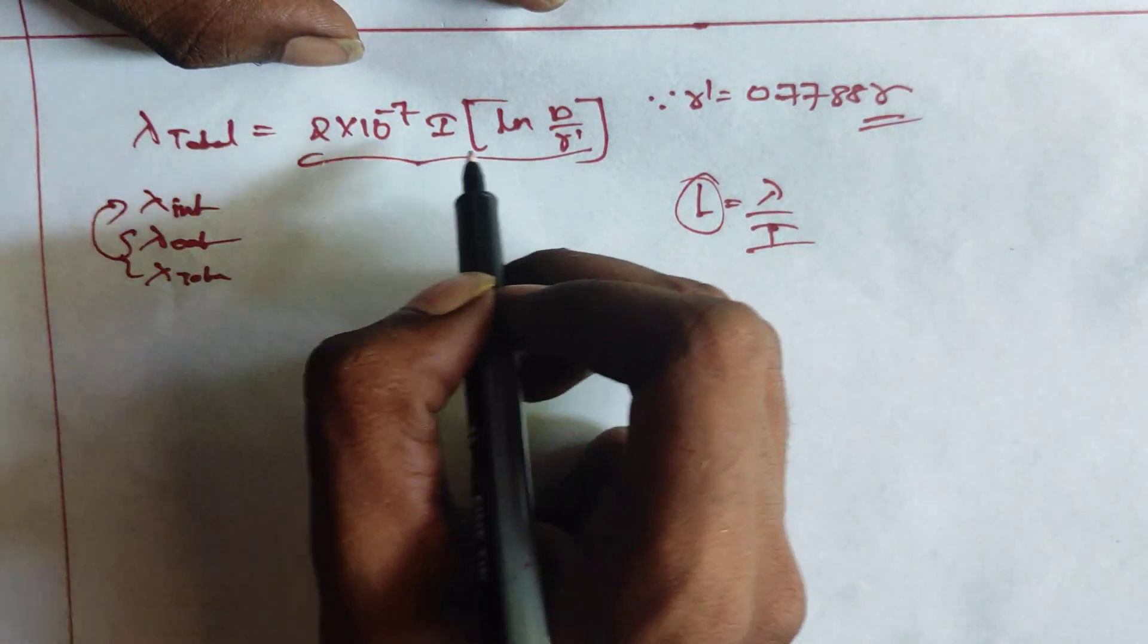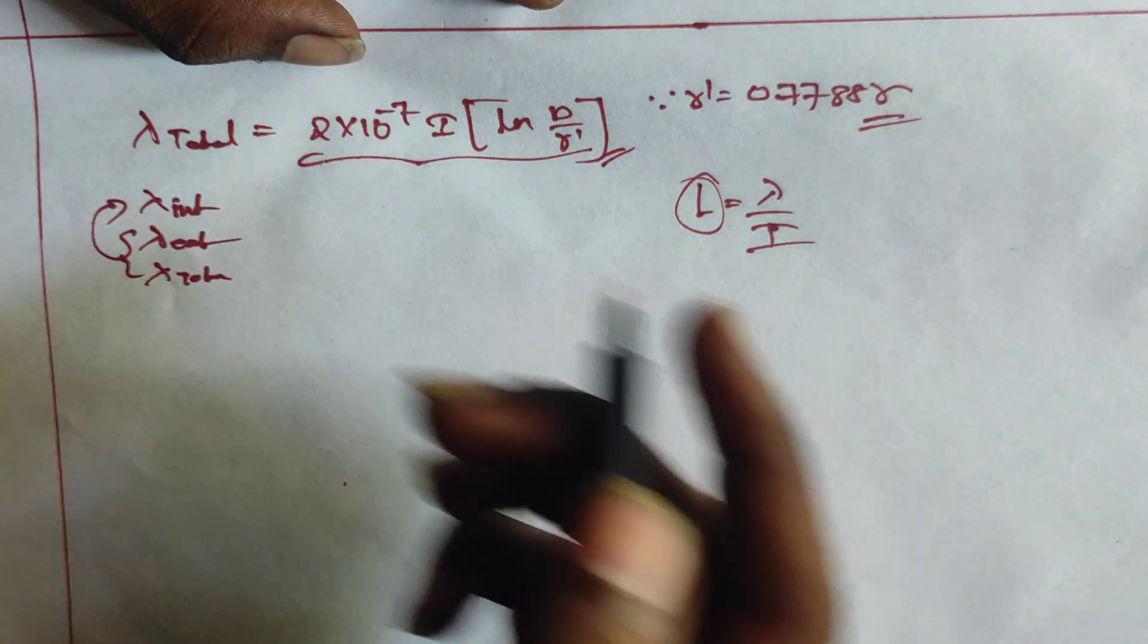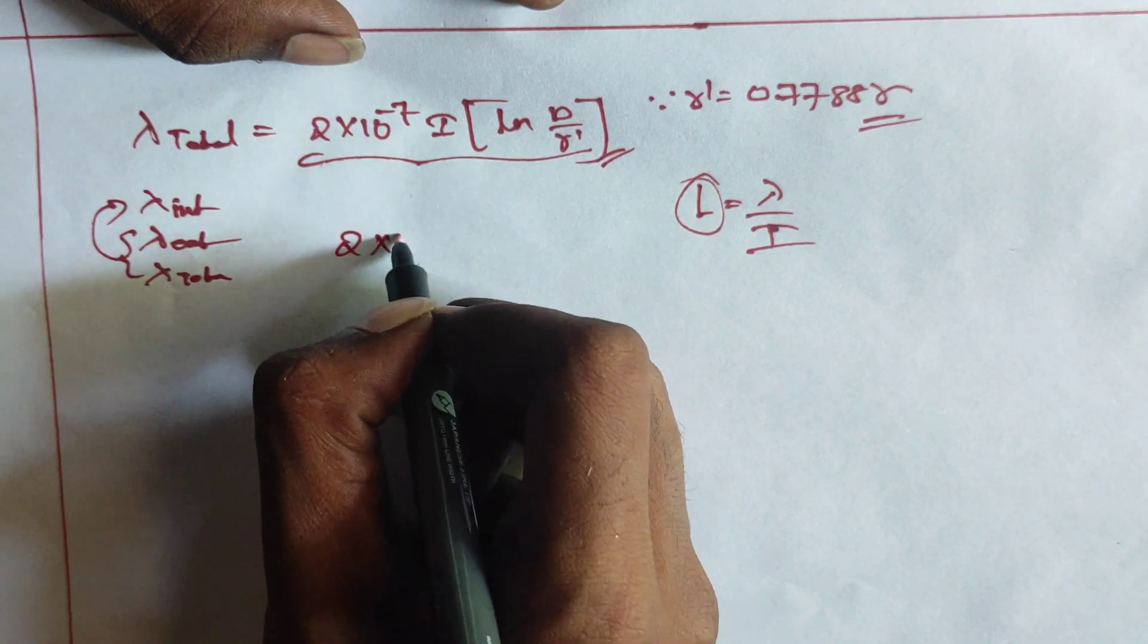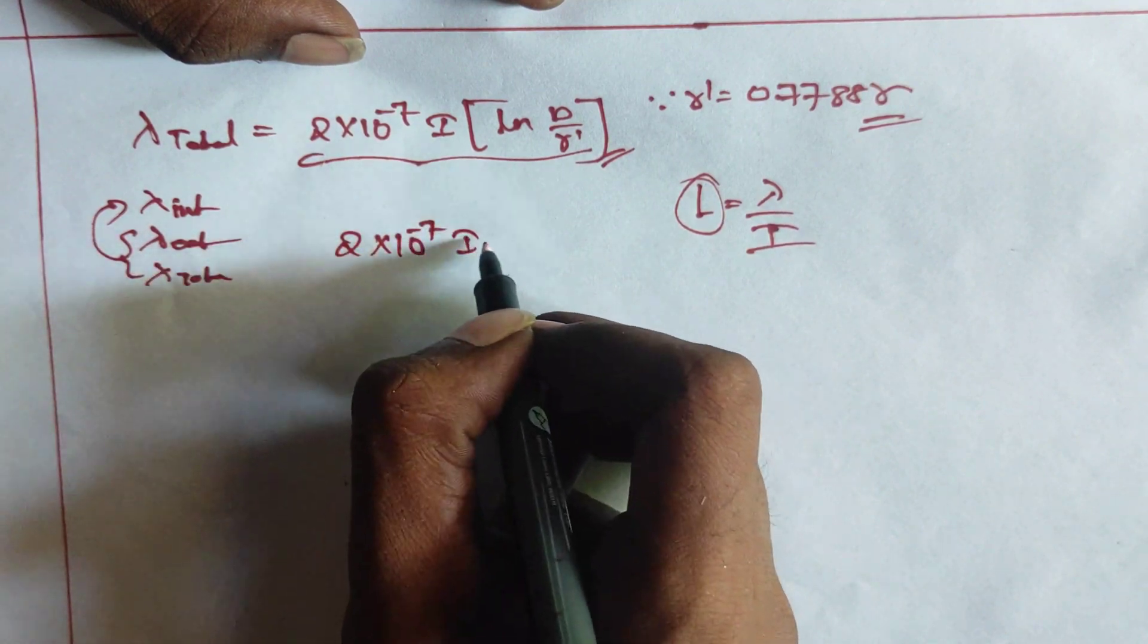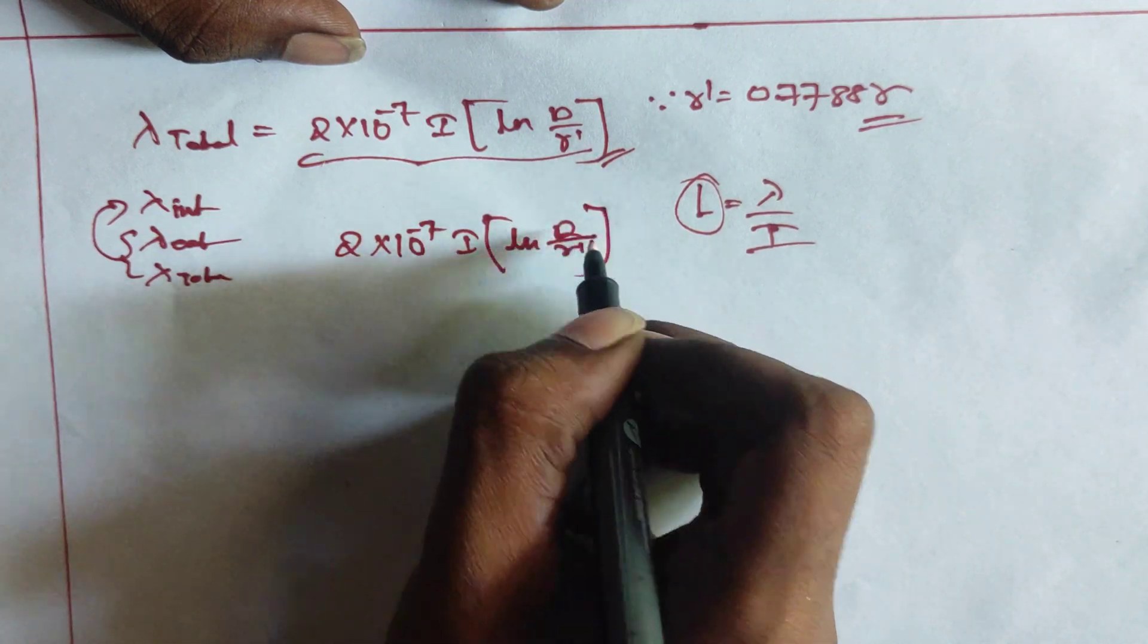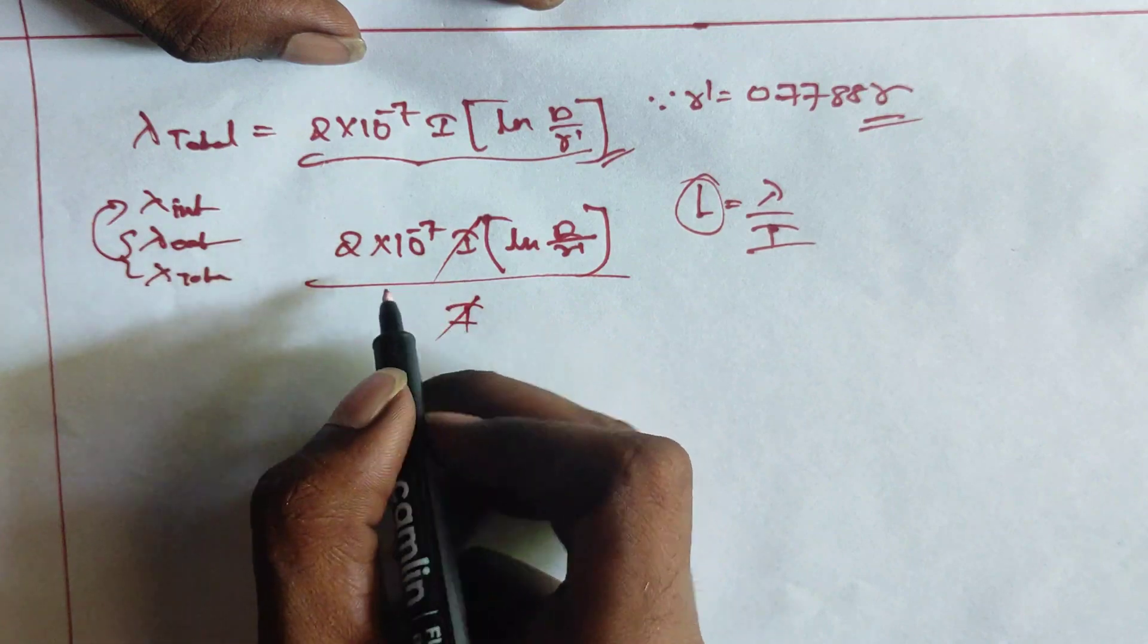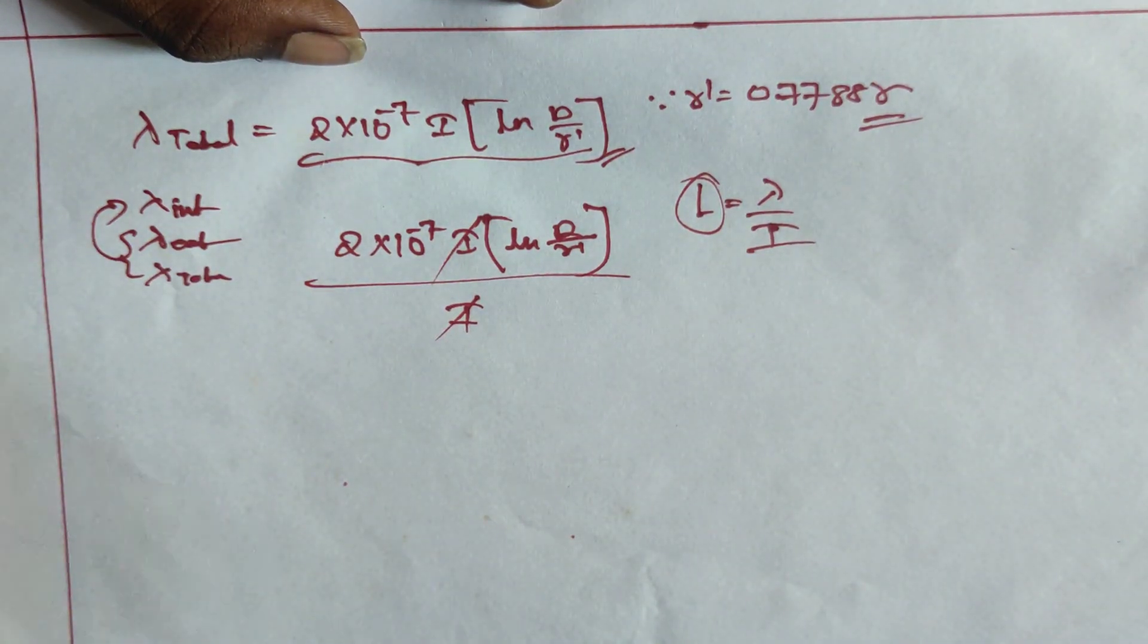So, what we need to do means, we have already remained with this flux linkage, total flux linkage, that is lambda total. Then, if I divide this expression with I, then what will happen, log of D by R dash. If it is divided with I, then I will get cancelled.